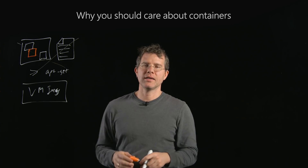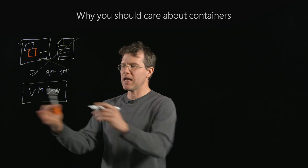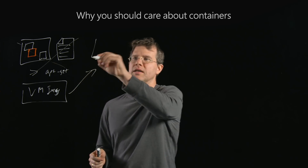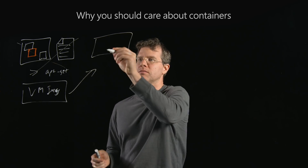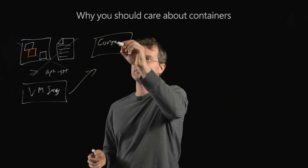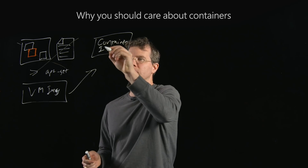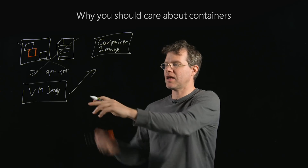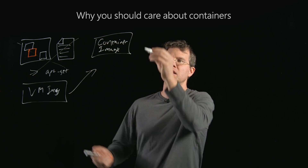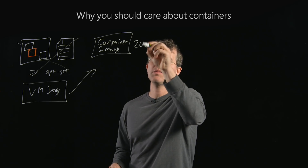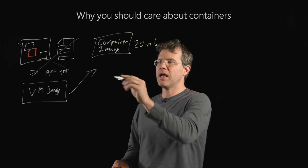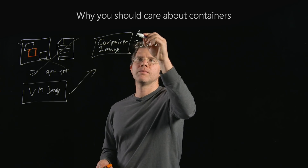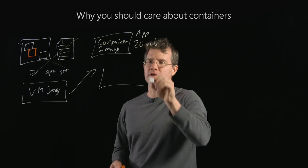Into that world came the idea of saying: let's take that VM image and turn it into a container image — a much lighter weight thing. Instead of being hundreds of megabytes, a good container image might be around 20 megabytes. And we'll separate out the app from the kernel.